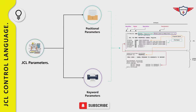Keyword parameters have no special position or order; however, they follow any required positional parameters within a job statement. For example, MSGCLASS and MSGLEVEL are coded after the positional parameters — accounting information and username. A keyword parameter is always followed by an equal sign and a value. In this example, MSGCLASS and MSGLEVEL are the two keyword parameters used in the job statement.